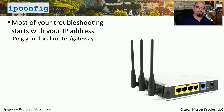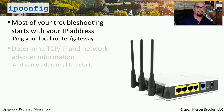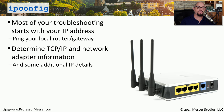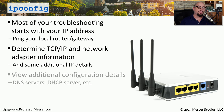When you sit down at a computer to troubleshoot any type of network connection, the first information you'll need will probably be network address configurations. The ipconfig utility is the perfect choice to gather information about how this local computer is configured on the network. It can tell you the IP address, the subnet mask, the default gateway, along with other information such as DNS server information, DHCP server information, and much more.